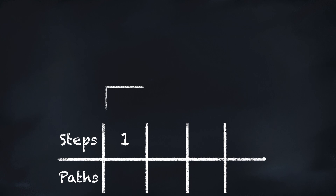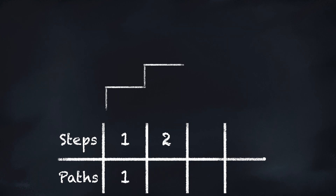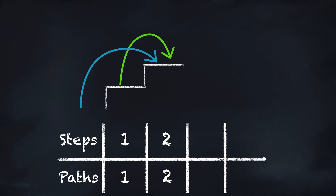At the first step, we only have one way to get there by taking one step. Next, we'll move to the second step. We can arrive at the second step by taking one step from the previous stair or taking two steps from the ground. This gives us a total of two ways to get to the second step.